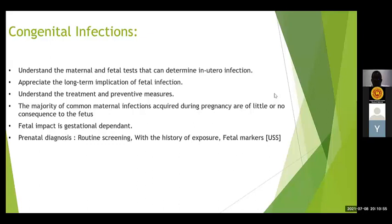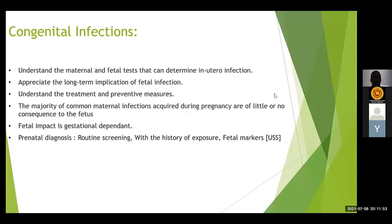Some infectious agents cause more harm to the baby during the first trimester. For example, rubella virus — if the mother gets infection during the first eight weeks of pregnancy, there is more serious damage to the baby. But if the mother gets rubella infection in the latter half of pregnancy, the chances of the baby being affected are minimal. Conversely, there are some infectious agents which cause more damage during the latter half of pregnancy, such as varicella virus, which is more severely transmitted to the baby in the latter half of pregnancy, causing severe hydrops.